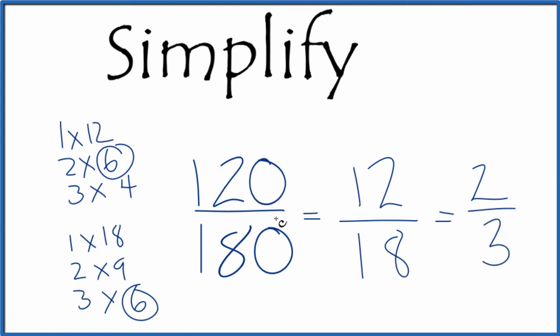I've simplified 120 over 180 down to 2 over 3. And these are all equivalent fractions. If you divide 2 by 3, 12 by 18, or 120 by 180, you get the same number. It's just that we've simplified 120 over 180 down to 2 thirds.